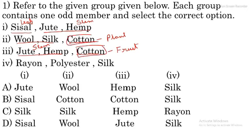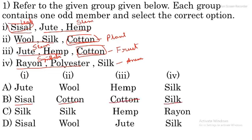In the group jute, hemp, and cotton — jute and hemp are stem fibers from plant stems, and cotton is a fruit fiber, so cotton is the odd member again. In rayon, polyester, and silk — rayon and polyester are synthetic man-made fibers, but silk is an animal fiber, so silk is the odd member. The answers are: first is sisal, third is cotton, fourth is cotton, and fifth is silk. So option V is the right answer.